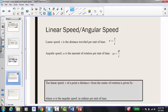All right, so now we're going to talk about linear speed. Linear speed is represented by v, is the distance traveled per unit of time. So we have this first equation, v equals s over t. Then we need to talk about angular speed, which is represented by omega. Omega is the amount of rotation per unit of time, and that's where this second equation here comes from: omega equals theta over t.